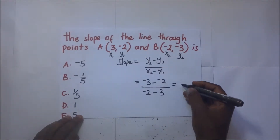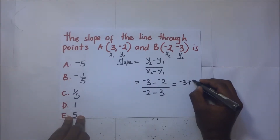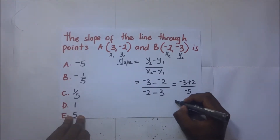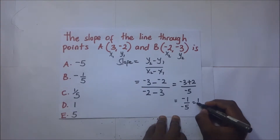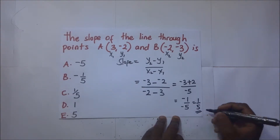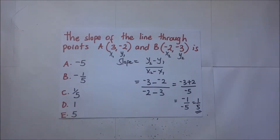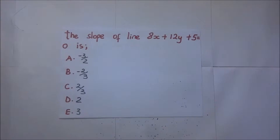We shall end up with negative 3 minus negative 2 over negative 2 minus 3, which simplifies to give a slope of 1 over 5. So the answer here is 1 over 5.